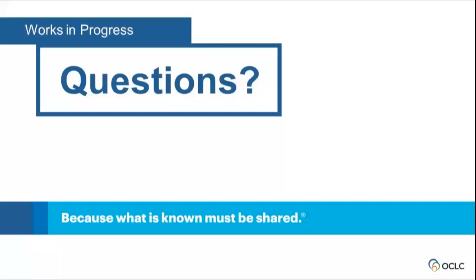We had a question from our colleague Karen Smith-Yoshimura: will you be including identifiers as part of the ContentDM output for names like Martin Luther King Jr.? Jeff was talking about normalizing data and converting strings to identifiers where you can. Yes, that is correct.